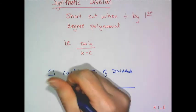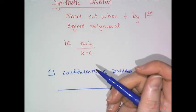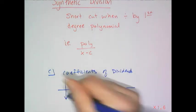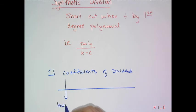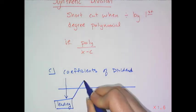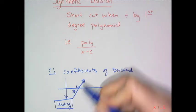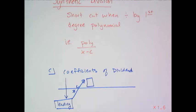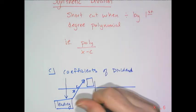I'll do an example with numbers in a second. I just want to show you the algorithm. The first thing you do is take the leading coefficient, it goes straight down. You don't do anything to it. Then you take this leading coefficient and multiply it by c and put it underneath the next coefficient. Then you add going down.